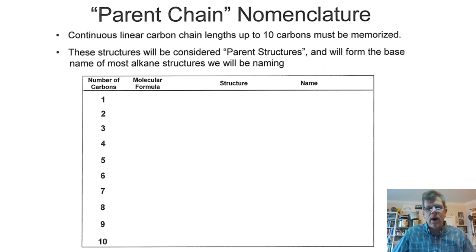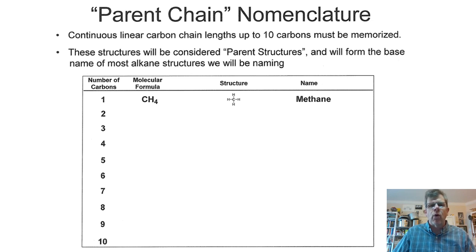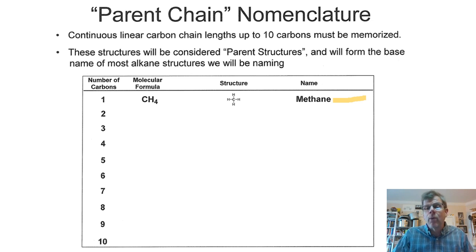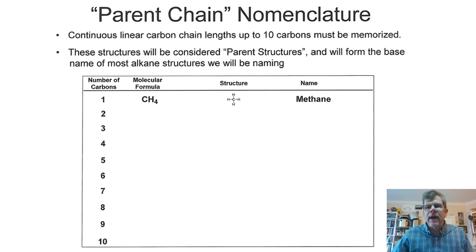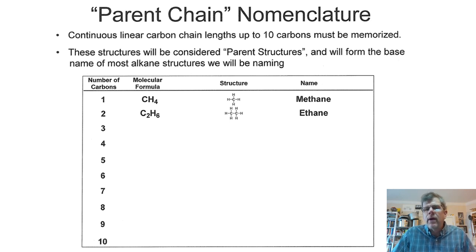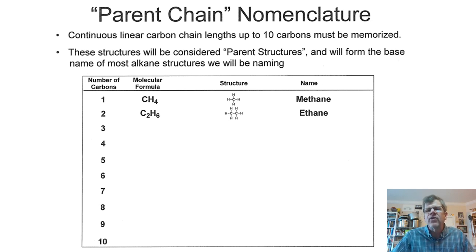For a one-carbon parent chain, the structure is CH4 and the name is methane. 'Meth' is our prefix meaning one, and '-ane' is the suffix meaning it is single-bonded — an alkane. For a two-carbon parent chain, the name is ethane. 'Eth' always means two. Notice the same suffix '-ane' appears throughout for alkanes all the way up to ten.